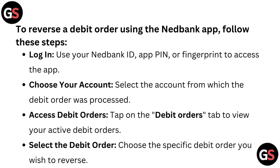Select the account from which the debit order was processed. Access debit orders: tap on the debit orders tab to view your active debit orders.